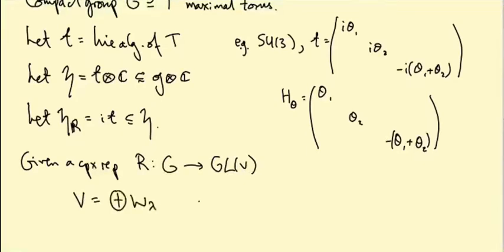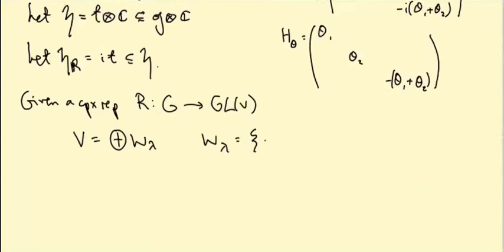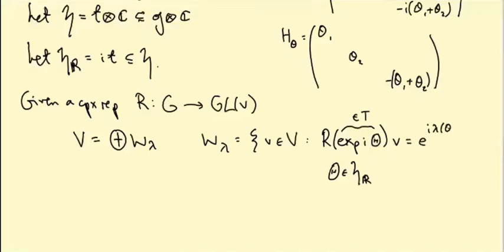W_lambda is now the set of v's such that R of X^{i*theta} - this is going to be an element of little H_R, so the i*theta lives in little t and then X^{i*big_theta} lives in the maximal torus - so R of X^{i*big_theta} of v equals e^{i*lambda(big_theta)} of v. This was our notion of weight space.